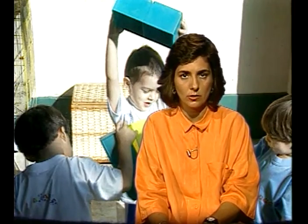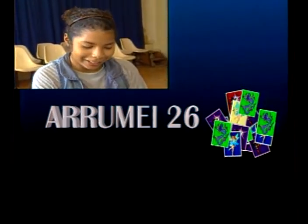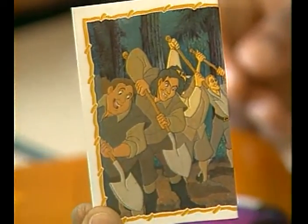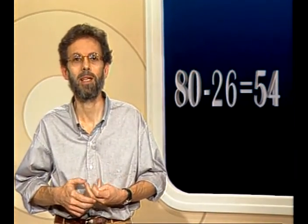Even with a lot of classroom practice, we often have difficulty understanding how children's thinking operates when facing certain situations. This is what happens with the type of resolution that children make very frequently when they have to solve a subtraction problem like this: a sticker album has 80 stickers; I've already collected 26 stickers. How many am I missing to complete the album?